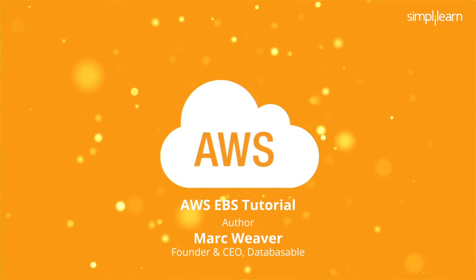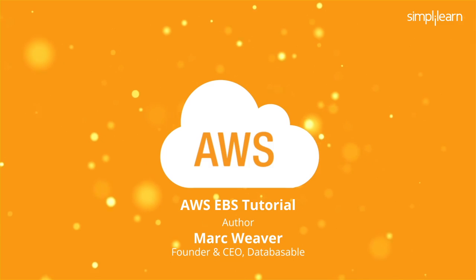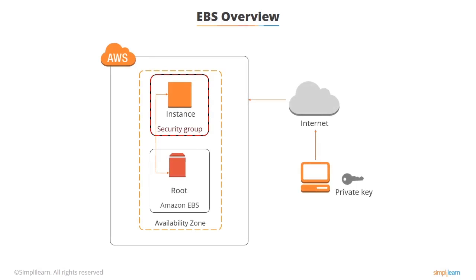Welcome to the overview of Amazon EBS section. Amazon Elastic Block Store, or EBS for short, provides persistent block level storage volumes for use with Amazon EC2 instances in the AWS cloud. Each Amazon EBS volume is automatically replicated within its availability zone to protect you from component failure, to offer high availability and durability. Basically, EBS is the disk volumes that you attach to your EC2 instance.